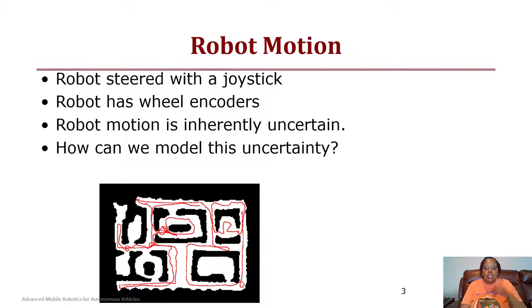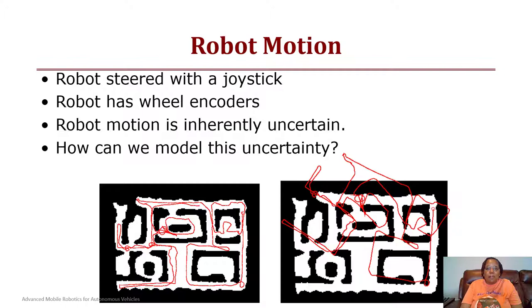Assume we have a robot that was steered with a joystick that has wheel encoders, and the robot's motion is inherently uncertain. We know this from odometry error. How can we model this uncertainty? That's what we're doing today, and we're using probabilities to do that. Although ideally this is how the robot was driven in the world on this map, this may be the robot's belief of where it thinks it is or how it moved.